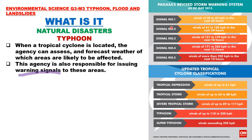The warning signals are: Signal Number 1 — winds of 30 to 60 km per hour in the next 24 hours; Signal Number 2 — 61 to 120 km per hour in the next 24 hours; Signal Number 3 — 121 to 170 km per hour in the next 18 hours; Signal Number 4 — 171 to 220 km per hour in the next 12 hours; and Signal Number 5 — winds of more than 220 km per hour in the next 12 hours. Signal Number 5 was added after Super Typhoon Yolanda.